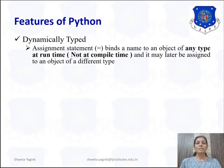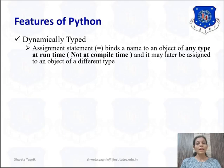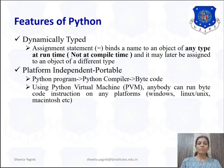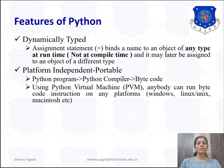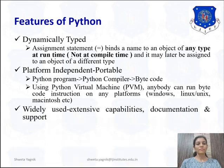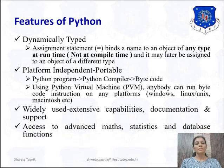Python is dynamically typed, meaning the object and its type are determined at runtime, not at compile time. The assignment statement binds the name to an object at runtime, and it may later be changed. It is platform independent — when a Python program is given to the Python compiler, it generates bytecode. Using the Python Virtual Machine, anyone can run bytecode instructions on any platform, supporting Windows, Linux, Unix, and Macintosh. It is widely used because of its extensive capabilities, documentation, support, and access to advanced math, statistics, and database functionality.